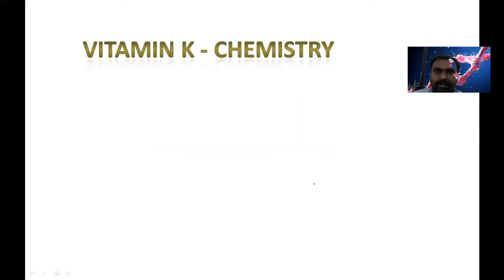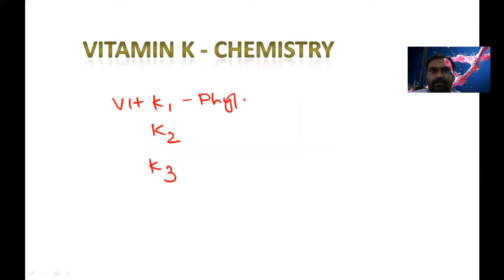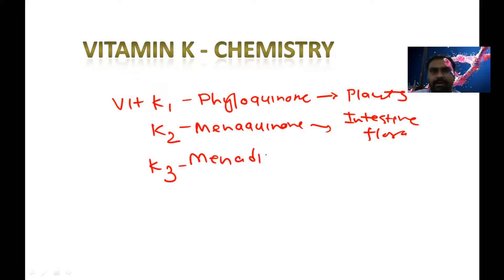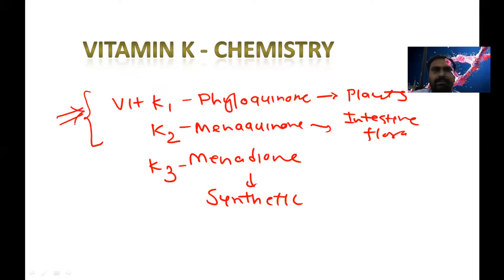In chemistry, there are three forms of vitamin K. That is vitamin K1, K2, and K3. K1 is called phylloquinone, which is produced by plants. Vitamin K2 is menaquinone, which is produced by the intestinal bacteria — intestinal flora. And vitamin K3 is menadione, which is a synthetic form. So K1 and K2 are natural, and K3 is synthetic.